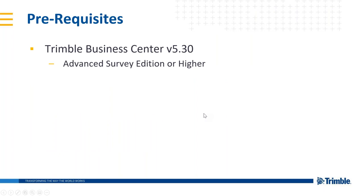To start using macros in Trimble Business Center, you have to have the Advanced Survey Edition or higher. The macro capability is locked to that edition, so you can't run macros in any lower version of the software, but it works in anything above that — things like the Site Construction, Site Modeling, Infrastructure Edition, or Utilities module. You can use it with versions from 5.0 and higher, but we recommend the current version. TBC 5.3 is our recommended version at this point in time.